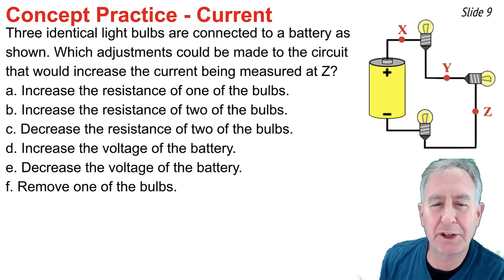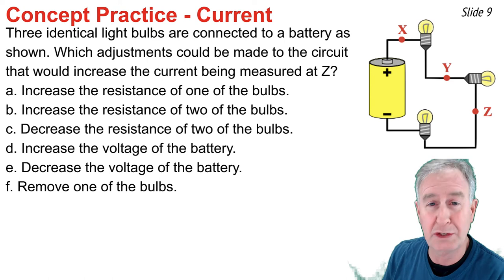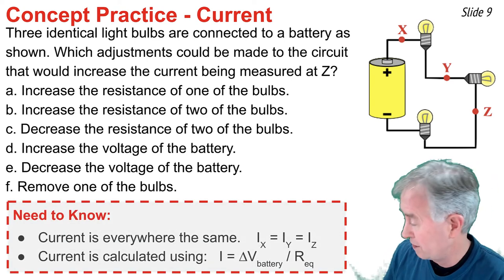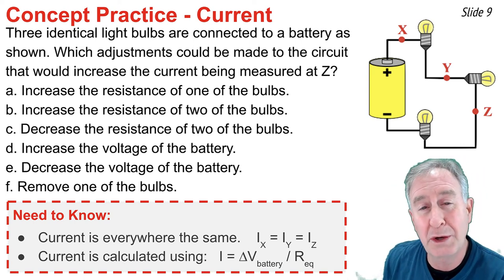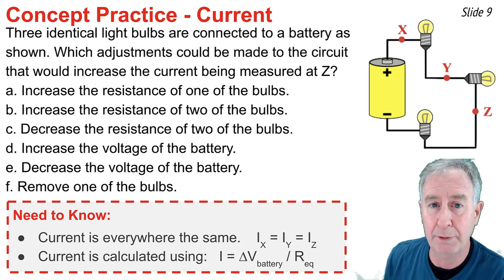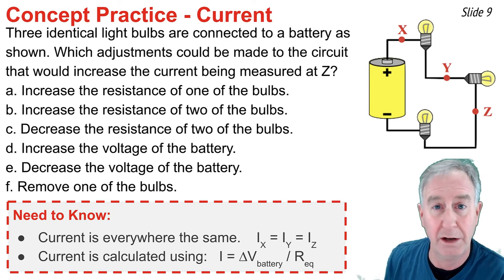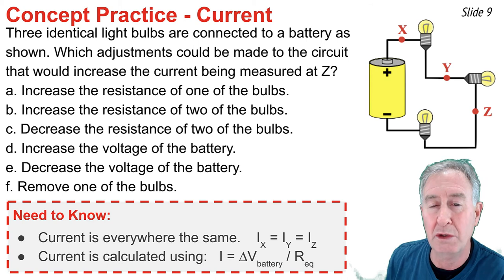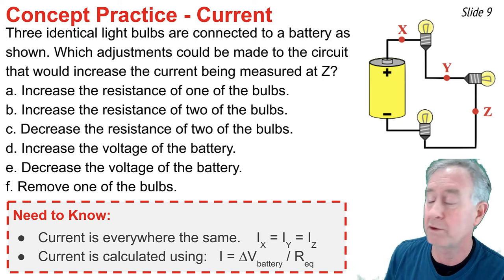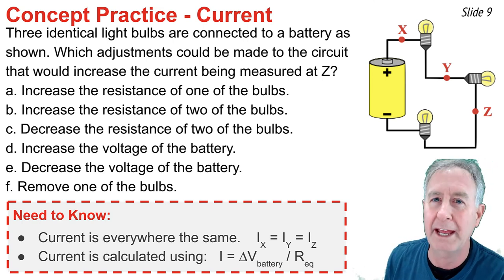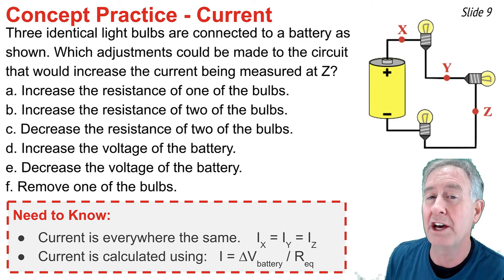Here's a conceptual practice question on current. Three identical bulbs are connected to a battery. Which adjustments could increase the current at location C? The current is everywhere the same, calculated as battery voltage divided by equivalent resistance. To increase the current, we need either an increase in battery voltage or a decrease in equivalent resistance. Choices A and B — increasing the resistance of one or two bulbs — would increase equivalent resistance and thus decrease current, so those are wrong. Choice C — decreasing the resistance of two bulbs — would decrease total resistance and increase current, so that's correct.